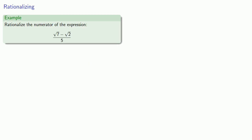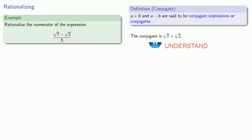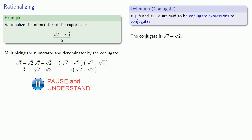For example, suppose we want to rationalize the numerator of the expression square root of 7 minus square root of 2, over 5. The conjugate will have the same terms — square root of 7 and square root of 2 — but the operation will be different. Since we have a minus here, we want our conjugate to have a plus. And since we want to be able to use equals, we have to multiply numerator and denominator by the conjugate. Since we are trying to rationalize the numerator, let's go ahead and multiply out this mess.